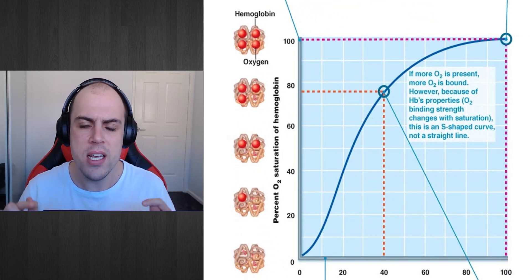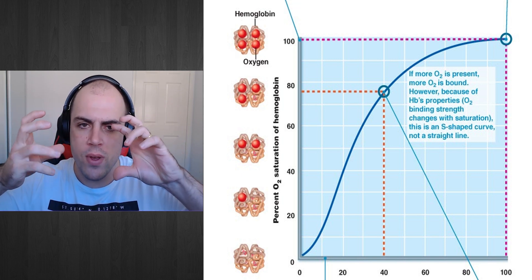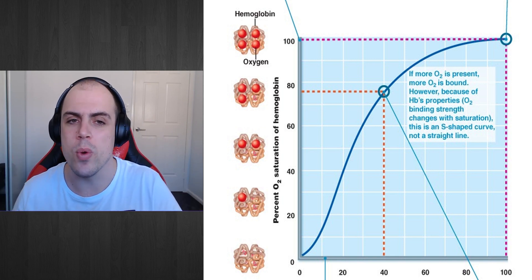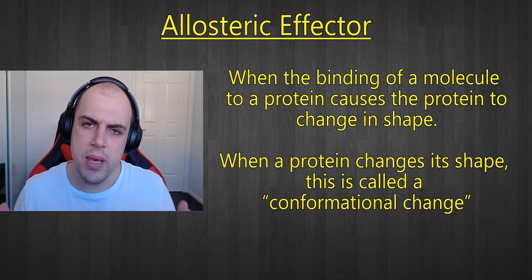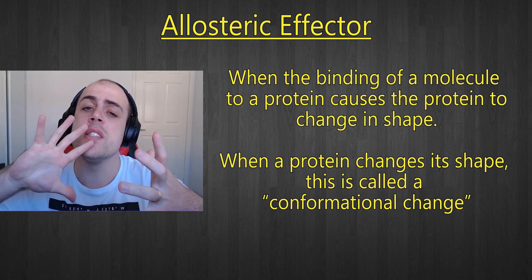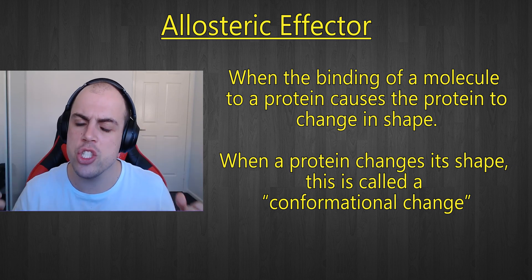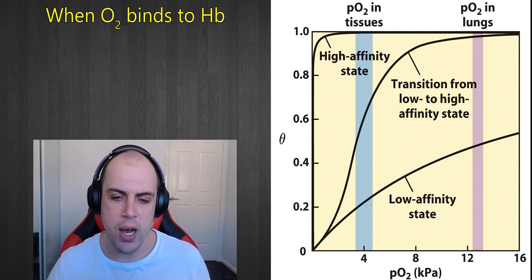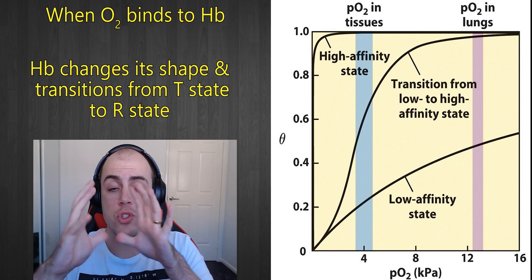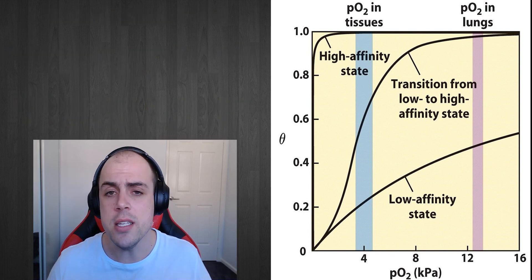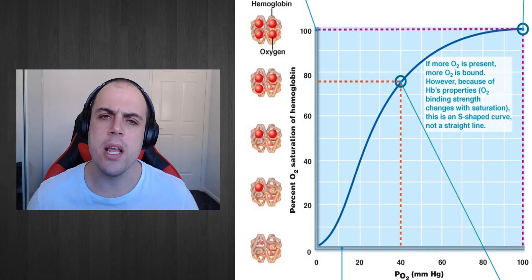These four binding sites are able to move around each other slightly, and this helps to change the binding affinity of oxygen to hemoglobin. As a result, oxygen is called an allosteric effector. This essentially means that when oxygen binds to hemoglobin, it causes hemoglobin to change its conformation — to change its shape. And as we've discussed, structure equals function, so changing the shape of hemoglobin changes how it functions. When oxygen binds, it causes hemoglobin to transition towards its R-state, making it easier for more oxygen molecules to bind — a process called cooperative binding.